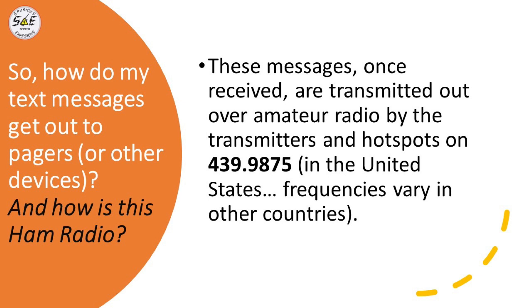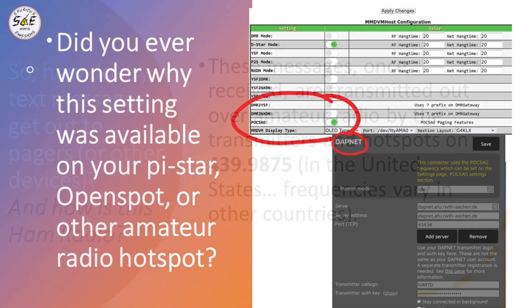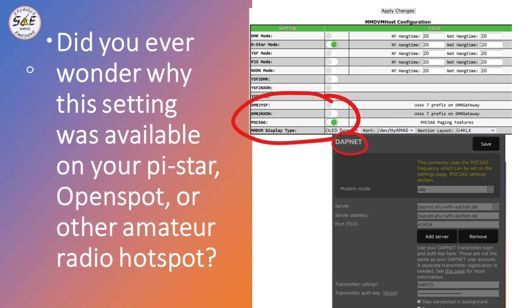How is this ham radio? Well, once messages are received, they're transmitted over amateur radio by the transmitters and hotspots on 439.9875 MHz in the United States — frequencies vary in other countries. If you have a hotspot, did you ever wonder why the POCSAG setting was available in your Pi-Star configuration, or on an OpenSpot or any other hotspot that supports POCSAG? Well, that's what it's for — it supports the DAPNET network.